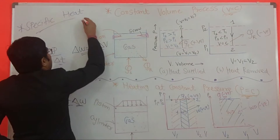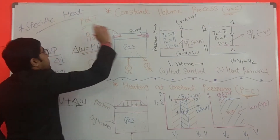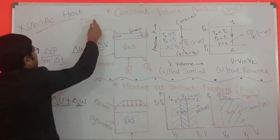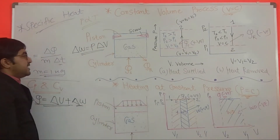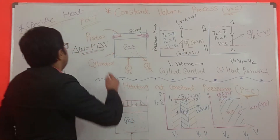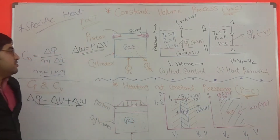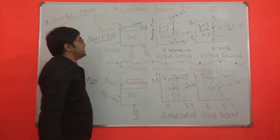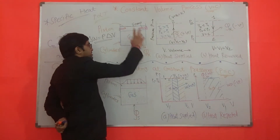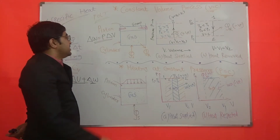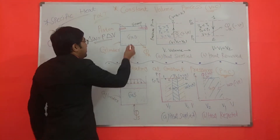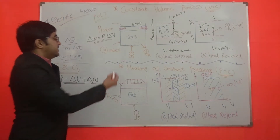As per the law P proportional to T — from Gay-Lussac's law and Boyle's law — when volume remains constant, pressure is directly proportional to temperature. So when we supply heat energy, the gas cannot expand because the piston remains fixed by a locking device. Whatever heat energy we supply to the vessel is utilized to increase the temperature of the gases.